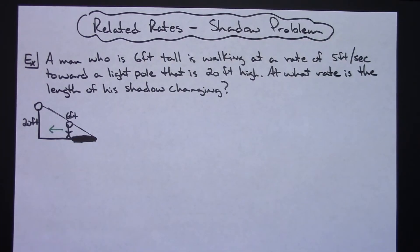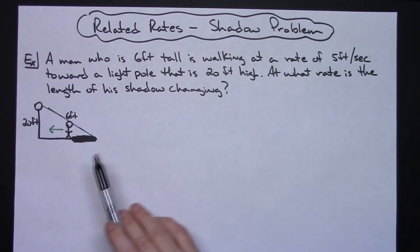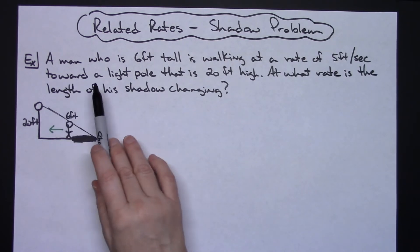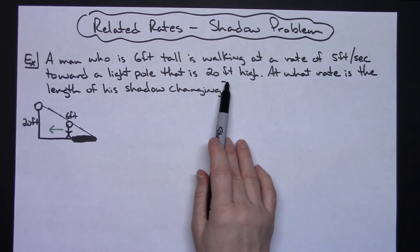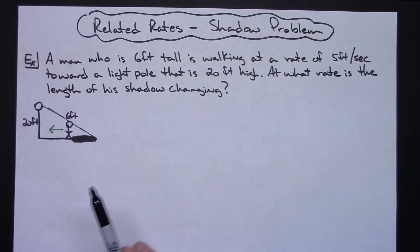Just some things to think about when you are doing these shadow problems. Now in particular, the one that I want to do here is we've got a man who's six feet tall. He is walking at a rate of five feet per second, but he's walking toward a light pole that is 20 feet high. At what rate is the length of his shadow changing?